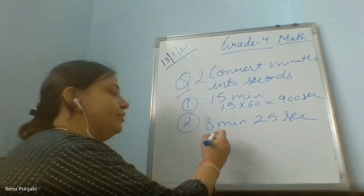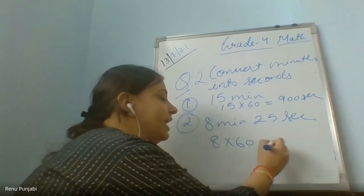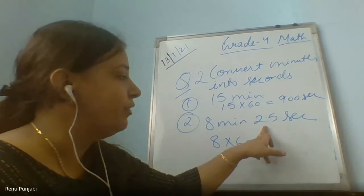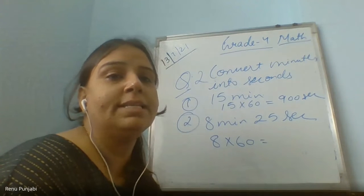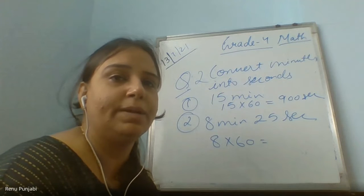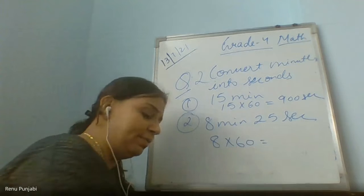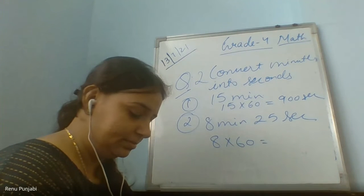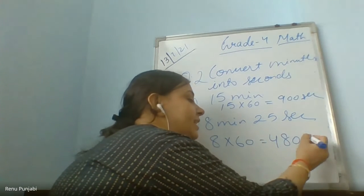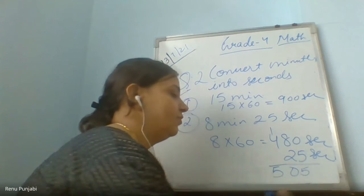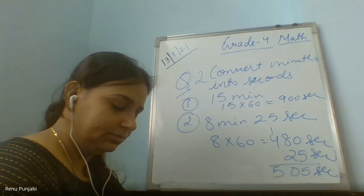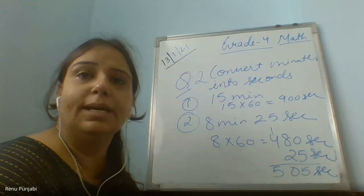For 8 minutes 25 seconds: first convert 8 minutes into seconds, then add the 25 directly because 25 is already in seconds. 8 multiplied by 60 is 480 seconds, plus 25 seconds equals 505 seconds. Till here everyone is clear.